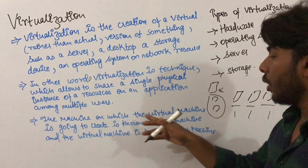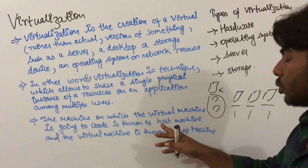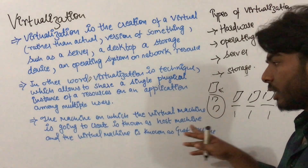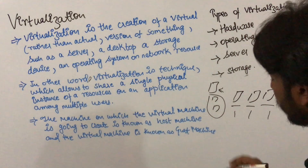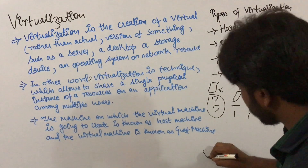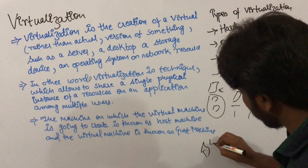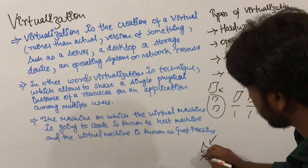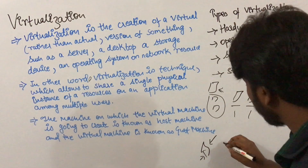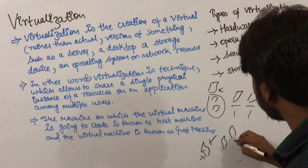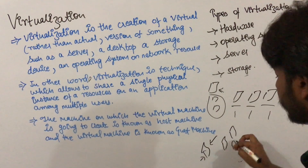The machine on which the virtual machine is going to be created is known as the host machine, and the virtual machine is known as the guest machine. Suppose we virtualize this machine — then this machine is known as the host machine, and the virtualized version is known as guest machines.